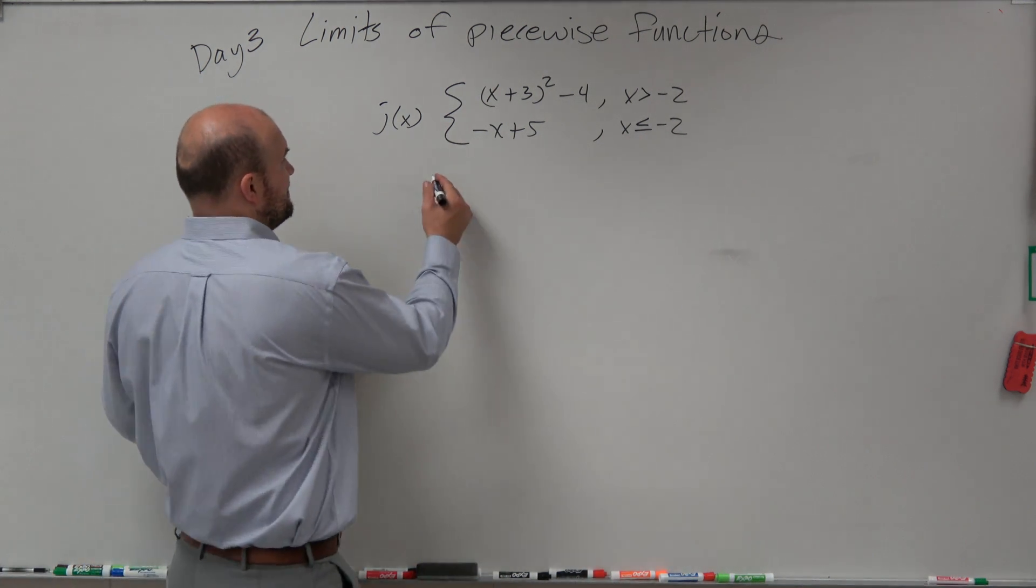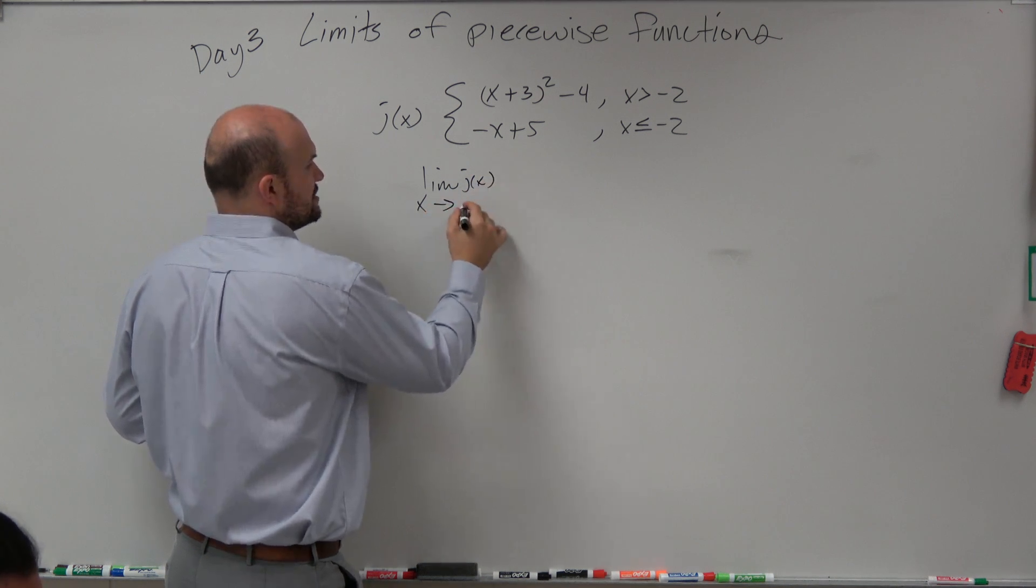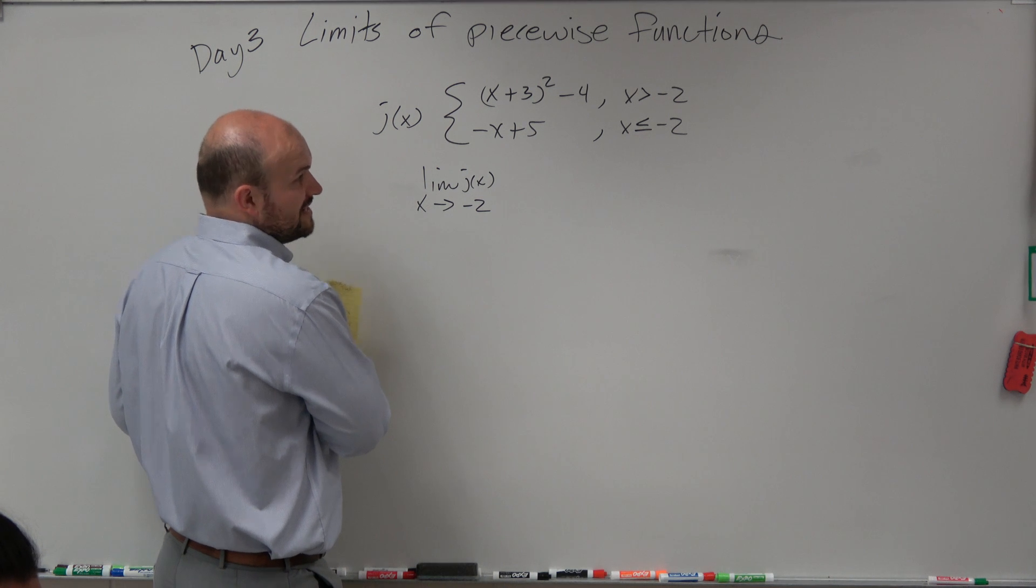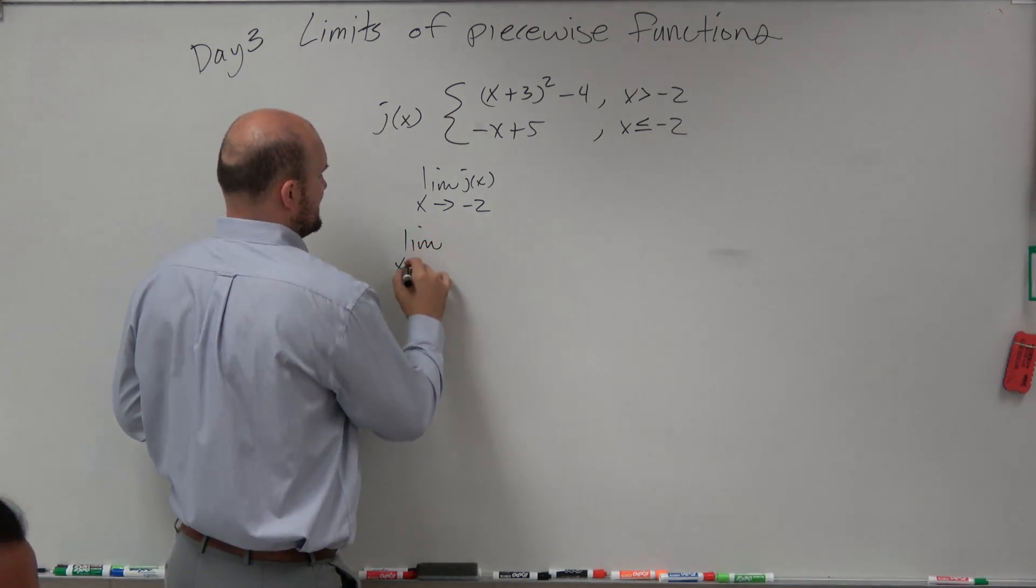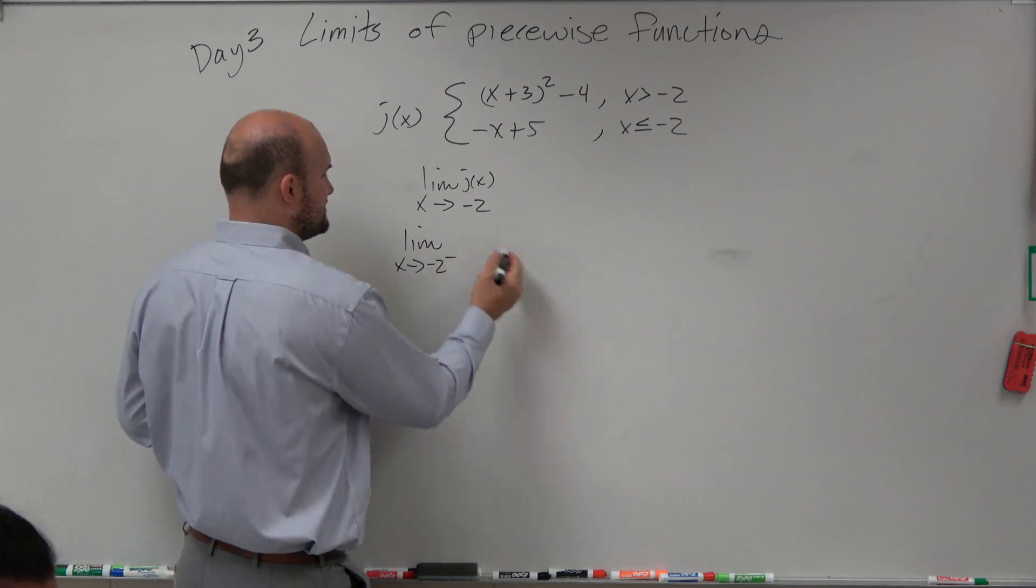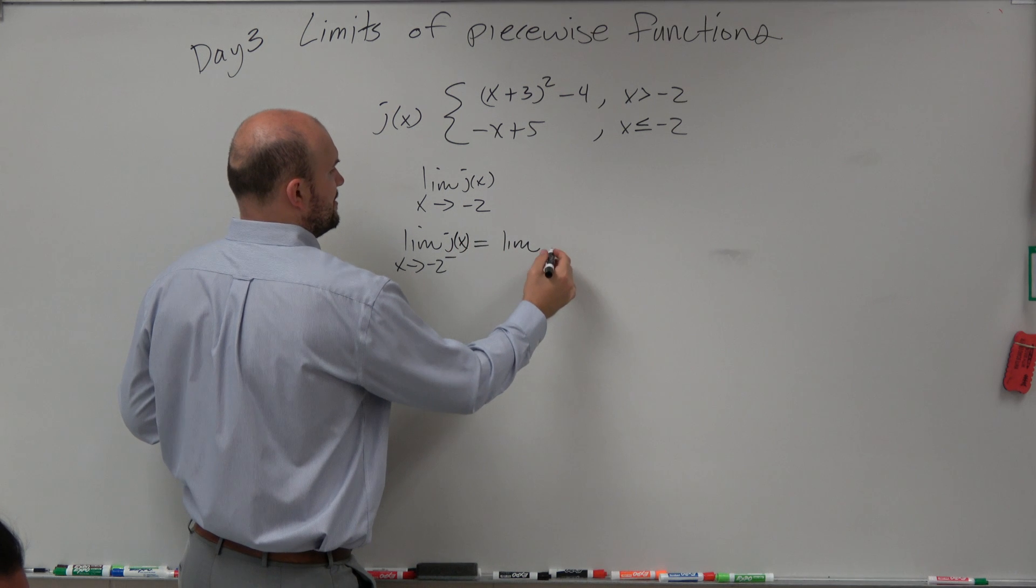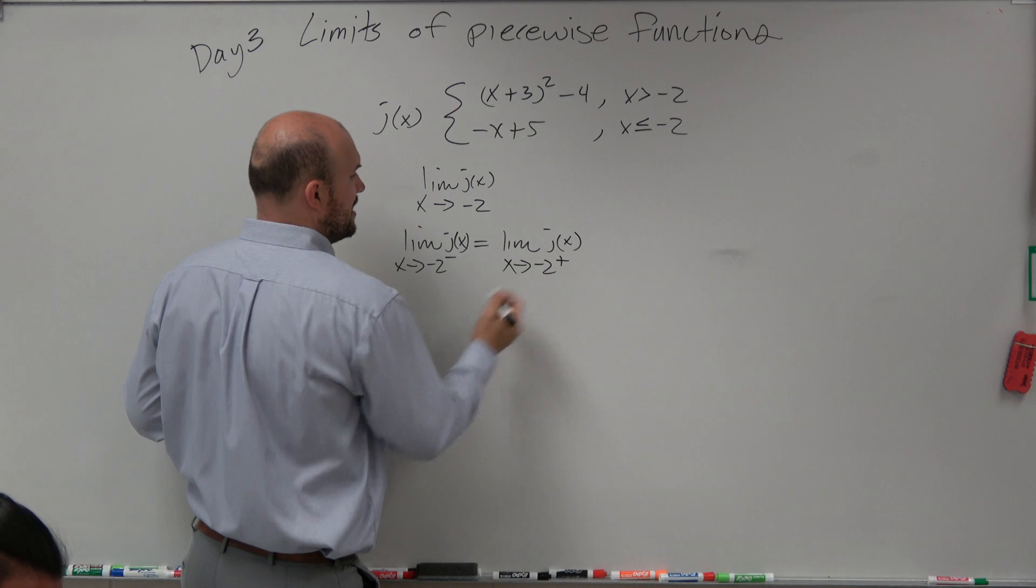So again, to evaluate the limit of j of x as x approaches negative 2, all we need to know is that the left-hand limit is going to be equal to the right-hand limit. So the limit as x approaches negative 2 from the left has to equal the limit of j of x as x approaches negative 2 from the right.